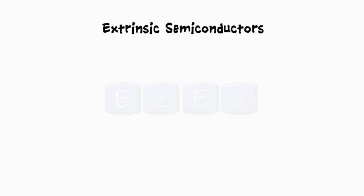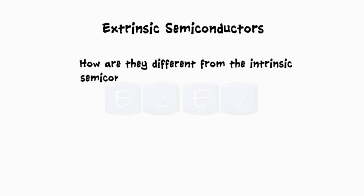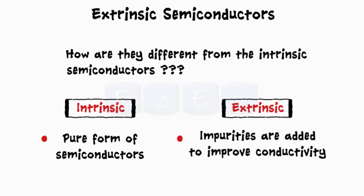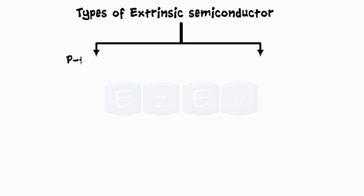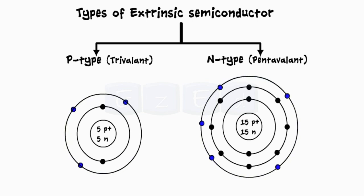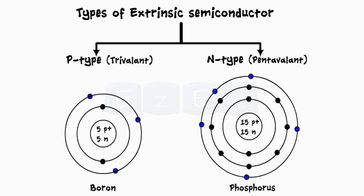Now let's understand the second type of semiconductors: extrinsic semiconductors. While intrinsic are the pure form of semiconductors, impurities need to be added to improve their conductivity. These semiconductors with impurities are called extrinsic semiconductors. Extrinsic semiconductors are further subdivided into p-type or trivalent and n-type or pentavalent. Trivalent atoms have three electrons orbiting in the outermost shell, while pentavalent atoms have five electrons. Common examples of trivalent are boron, gallium and indium, and of pentavalent are phosphorus, arsenic and antimony.